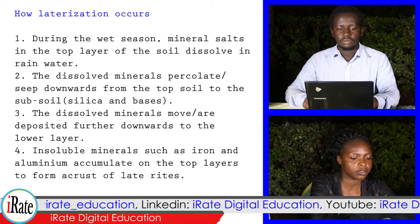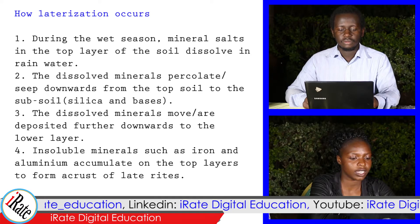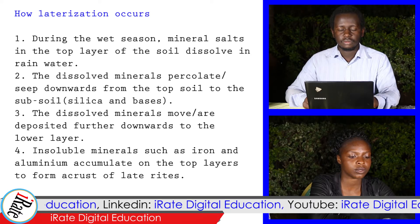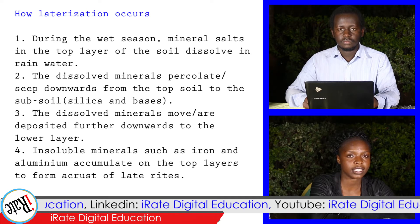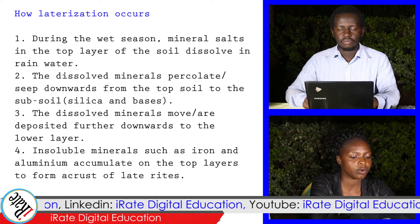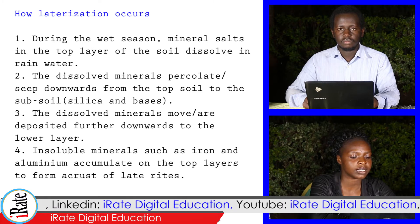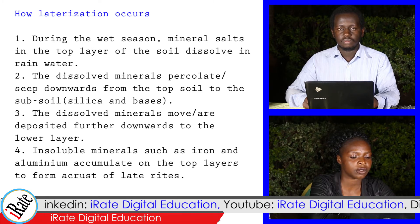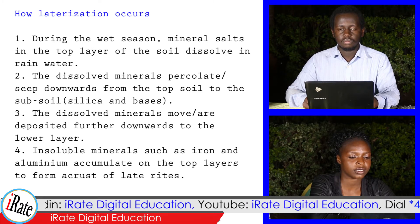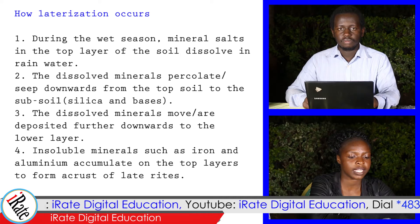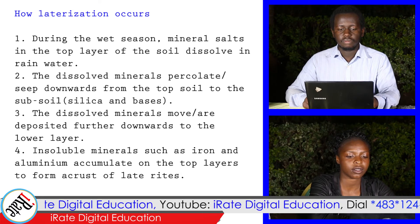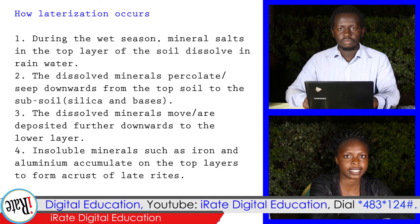Three, the dissolved minerals move or are deposited further downwards to the lower layer. Four, insoluble minerals such as iron and aluminium accumulate on the top layers to form a crust of laterite.